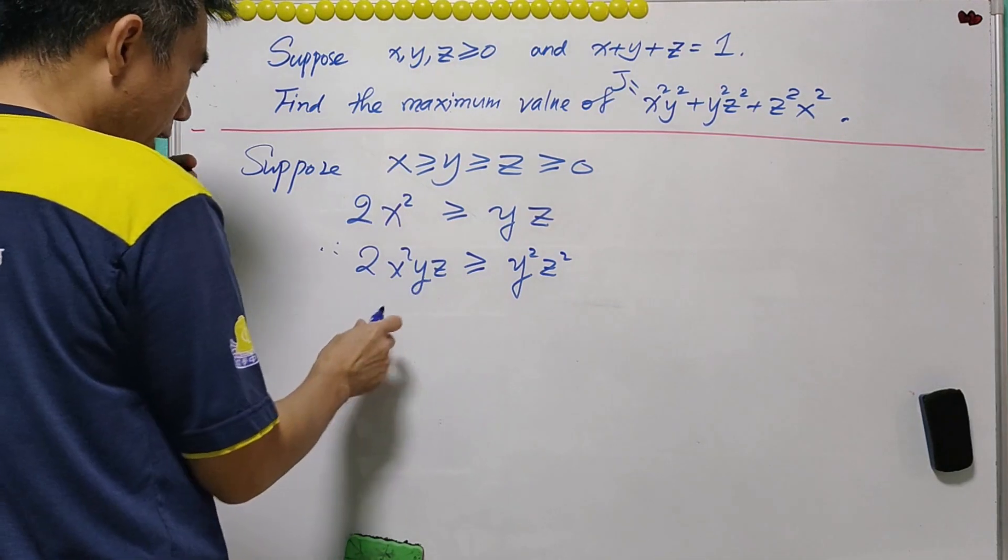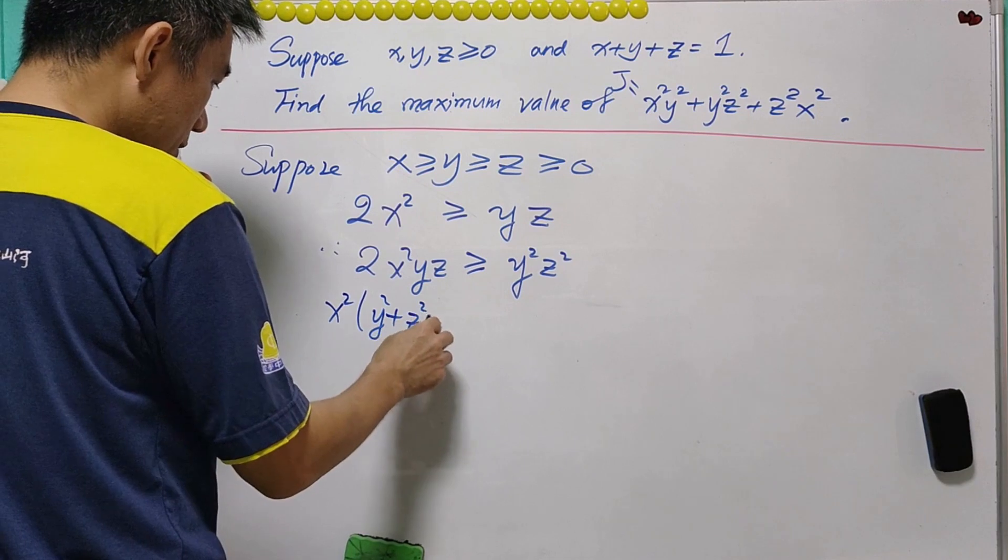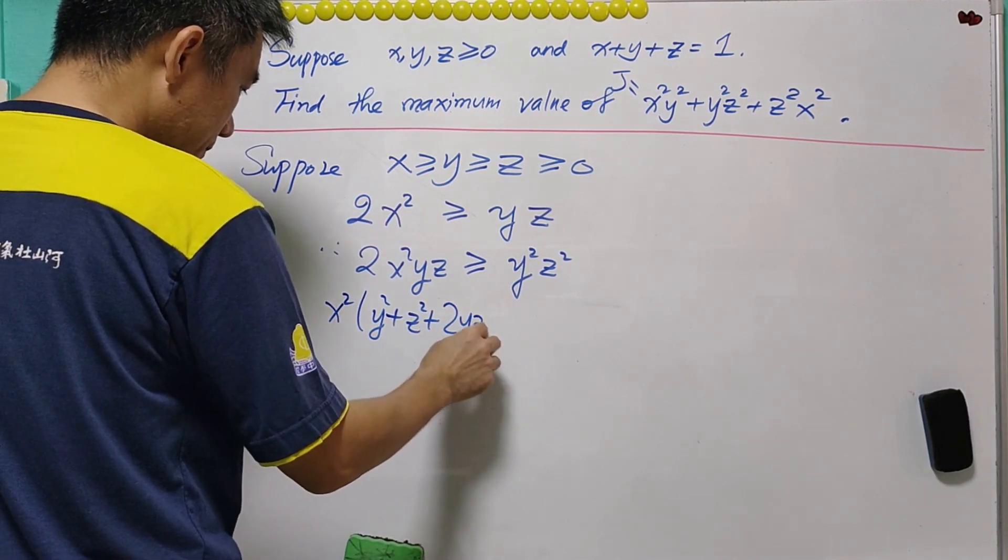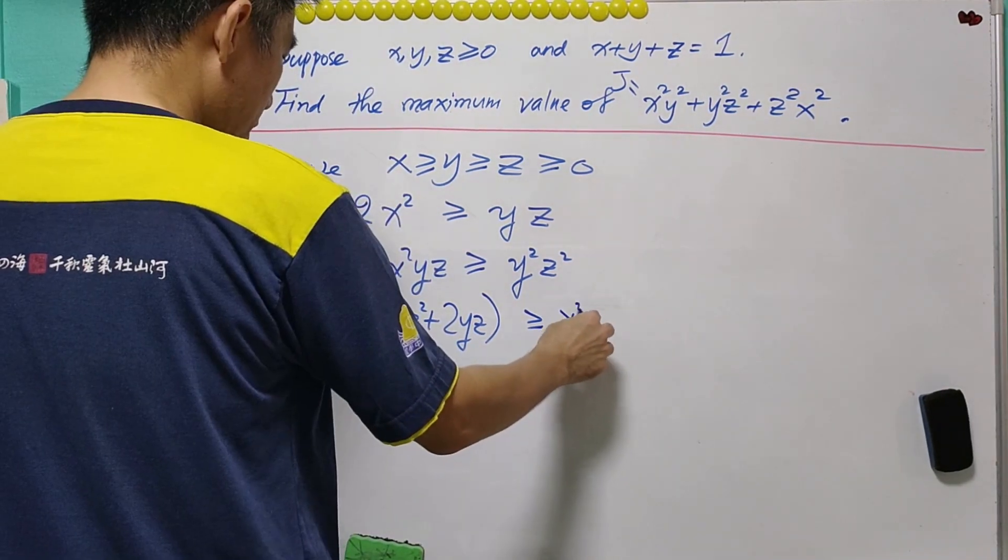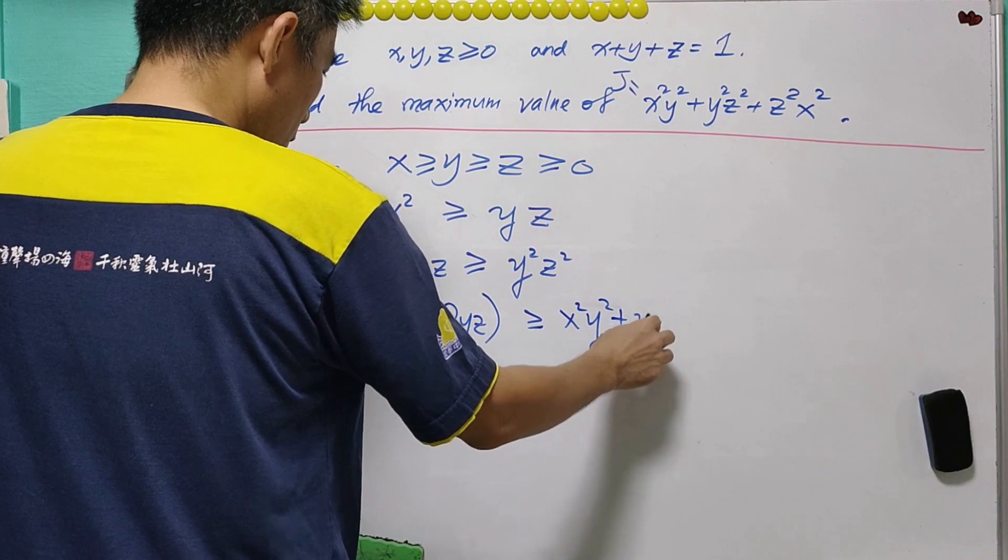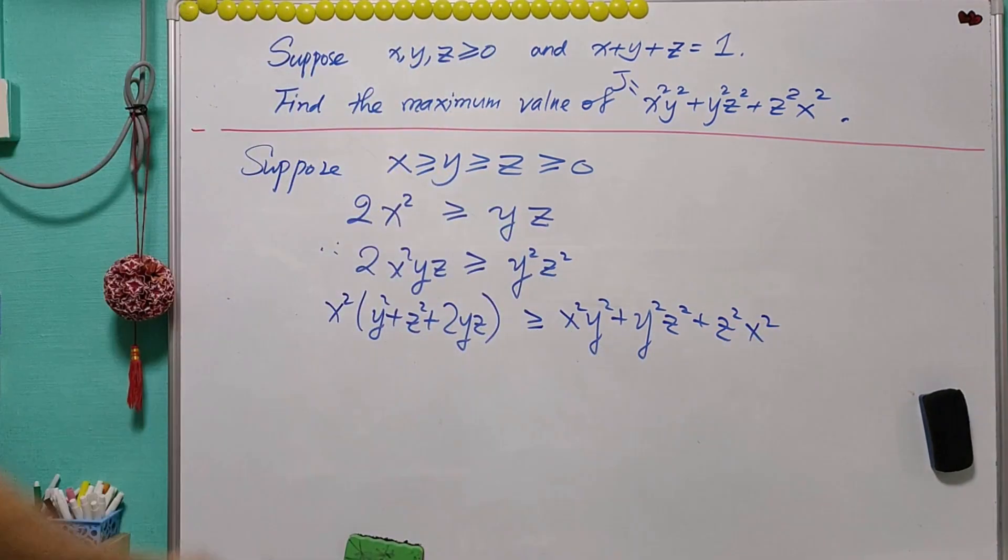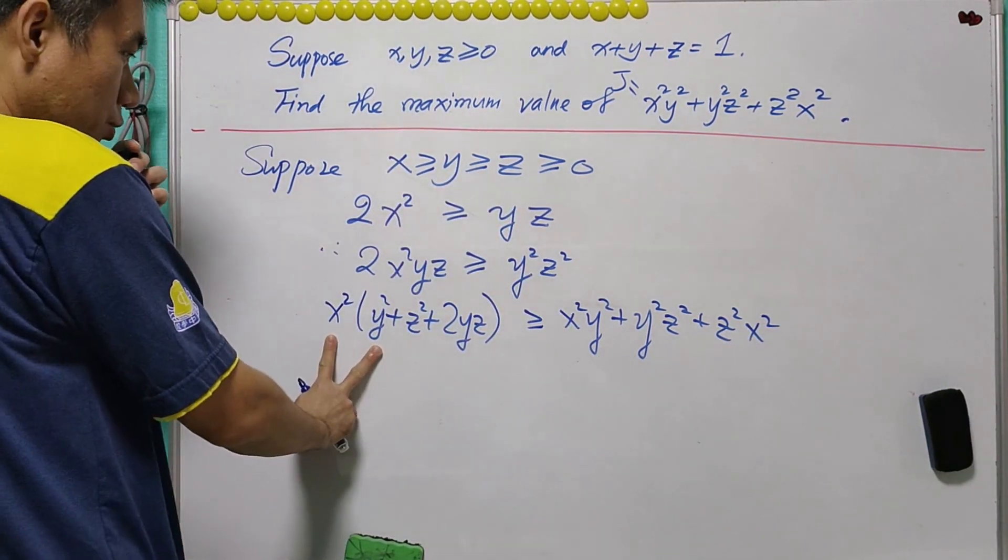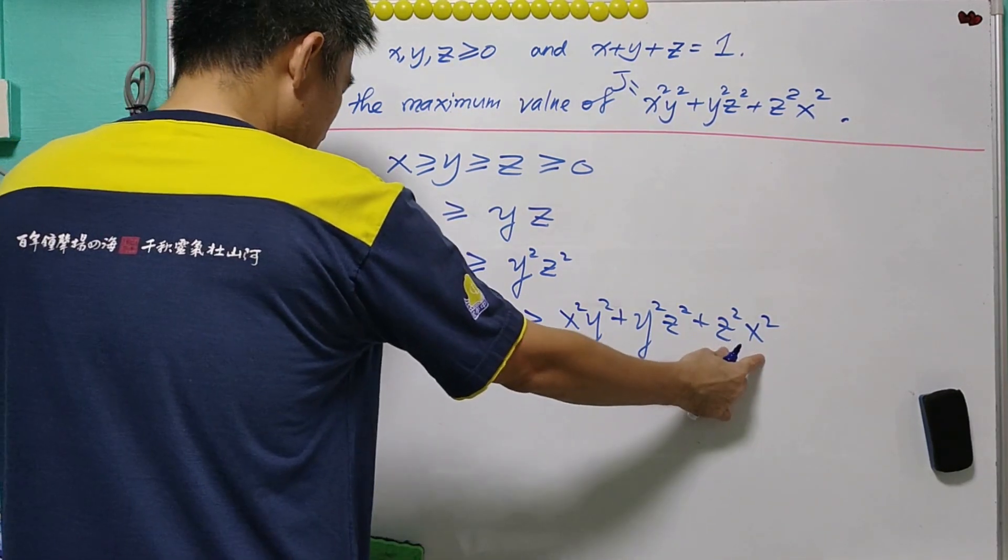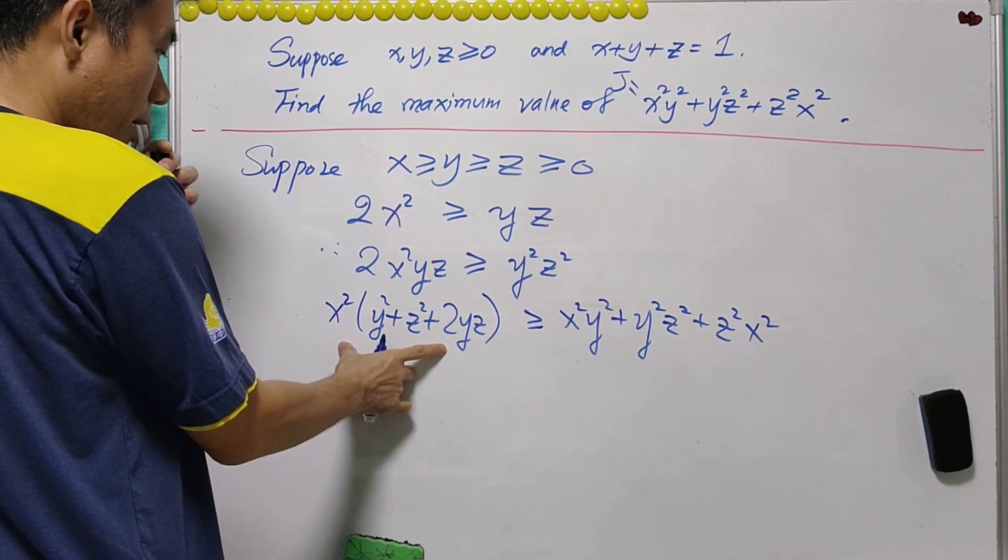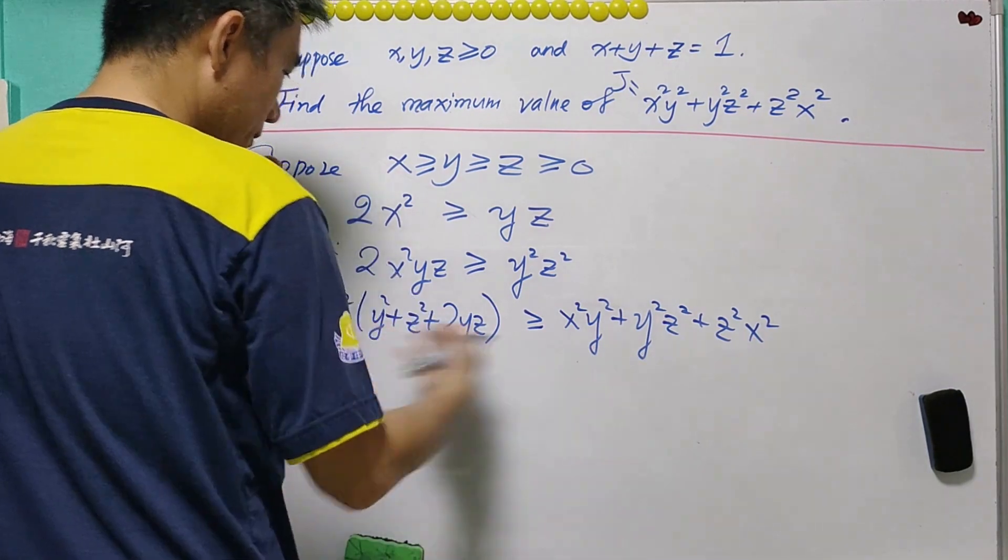And from here, we will know that x squared, y squared plus z squared plus 2y z will be greater than or equal to x squared, y squared plus y squared, z squared plus z squared, x squared. When we expand this, we have x squared and y squared, and we have x squared, z squared, and finally, 2x squared, y, z is greater than or equal to y squared, z squared.